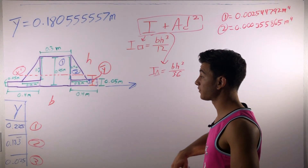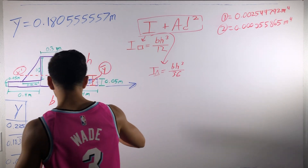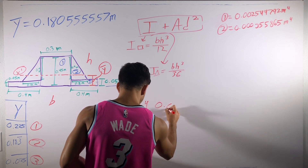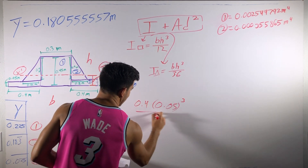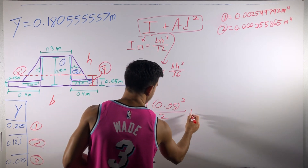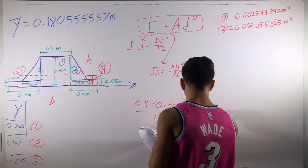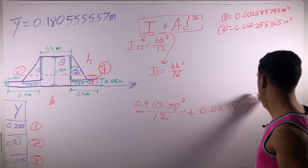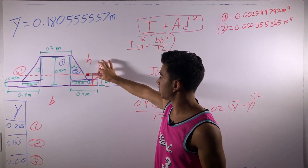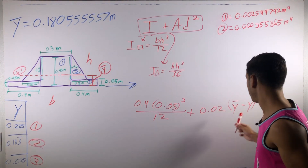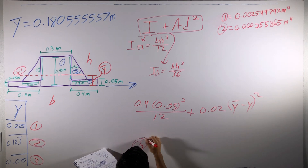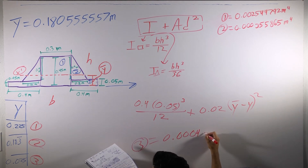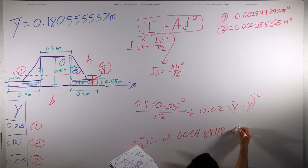For section three we're dealing with a rectangle again, so we use base times height cubed over 12. The base of section three is 0.4 and the height is 0.05: (0.4 × 0.05³) / 12, plus the area (0.02) times d squared, where d is the absolute value difference between y-bar and y. That gives a moment of inertia for section three of 0.000488118 meters to the fourth.